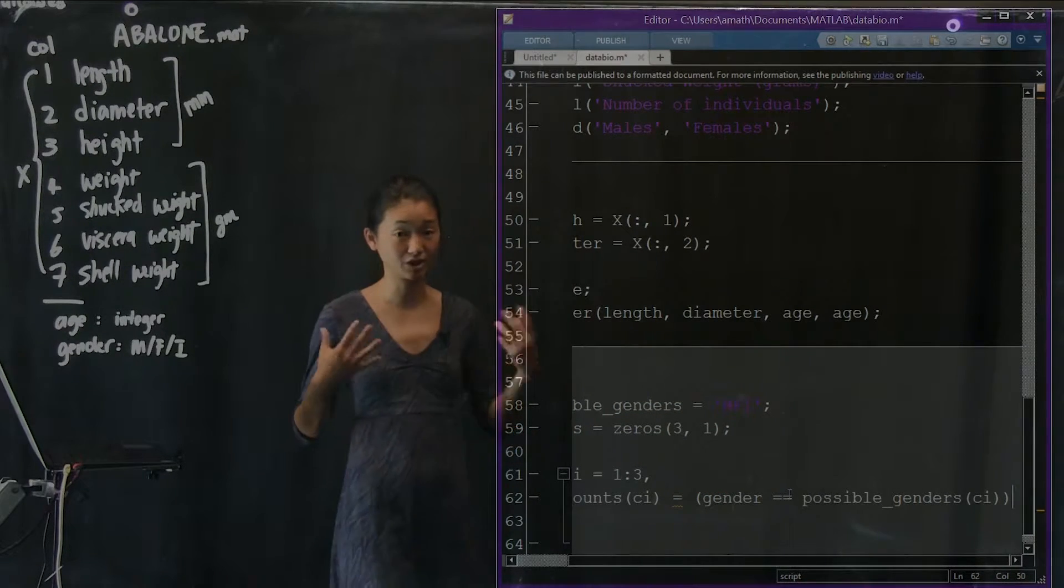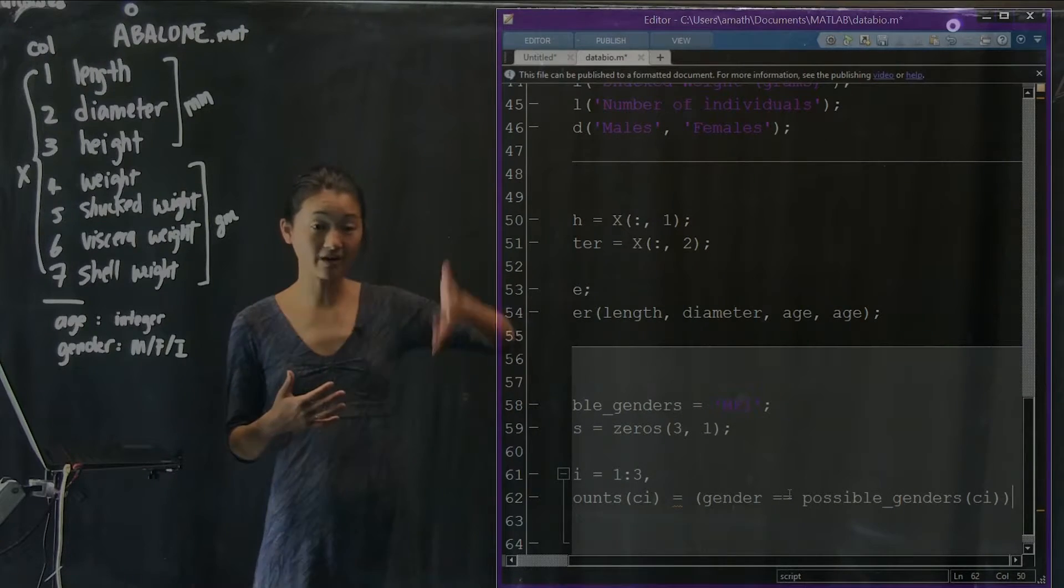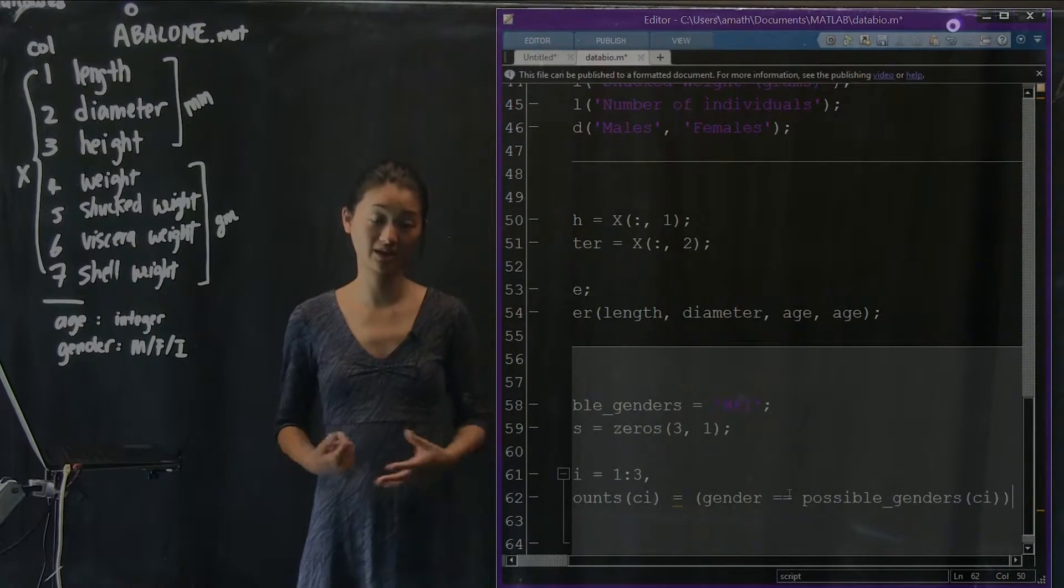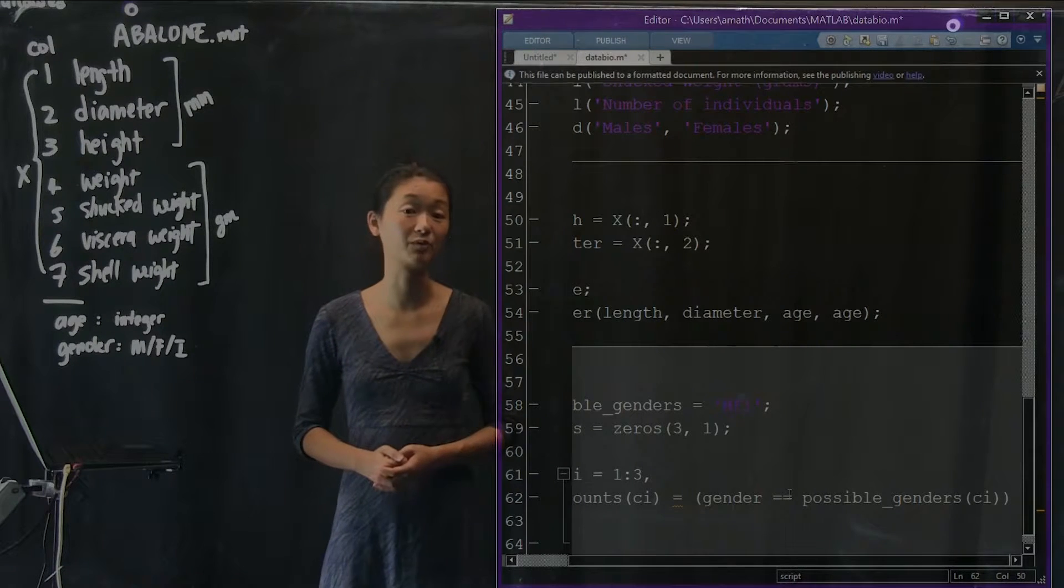That's going to return a long vector the same size as gender that's going to be full of zeros and ones. Zero when the answer was no and one for when the letter is yes.